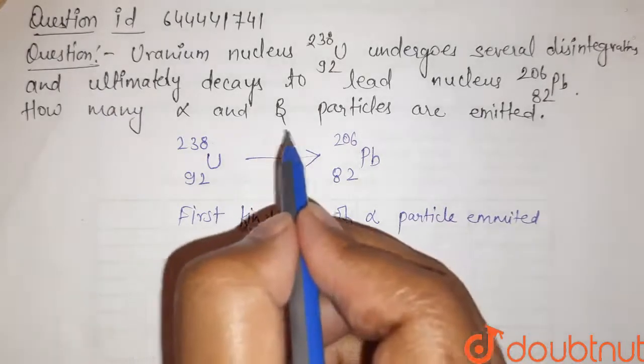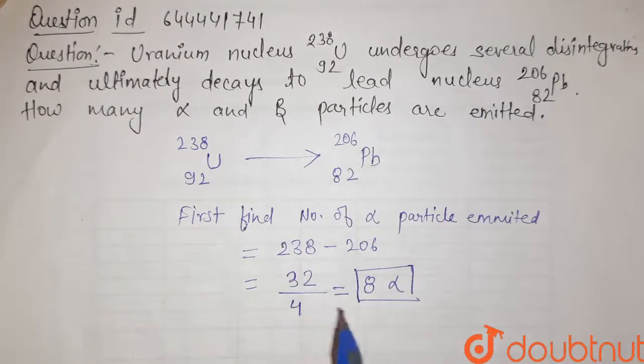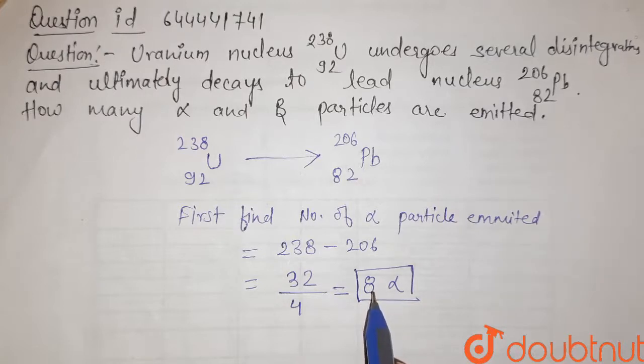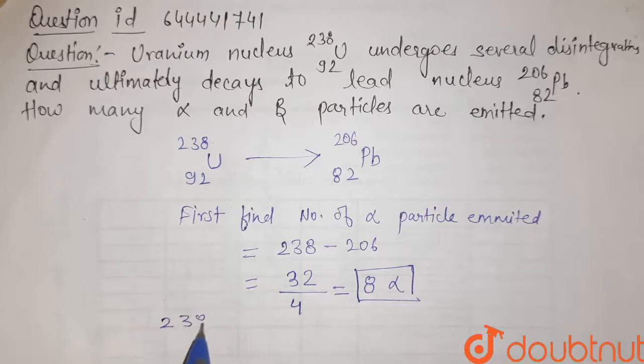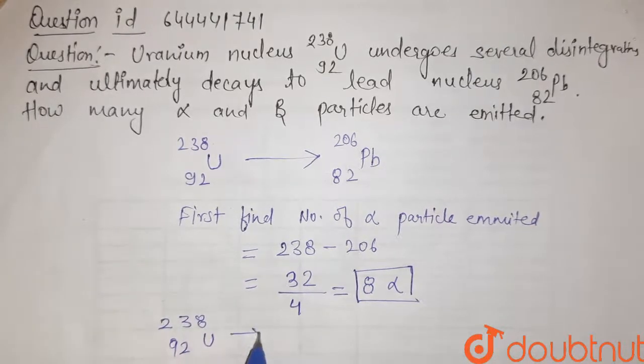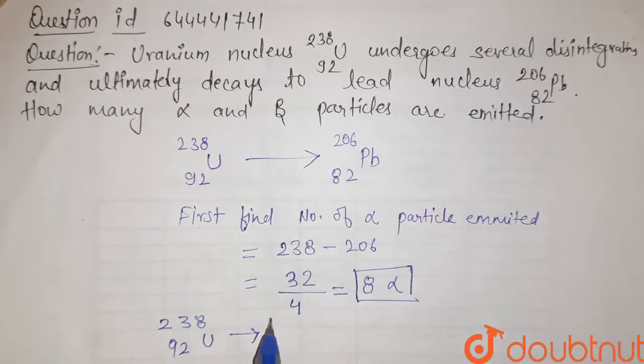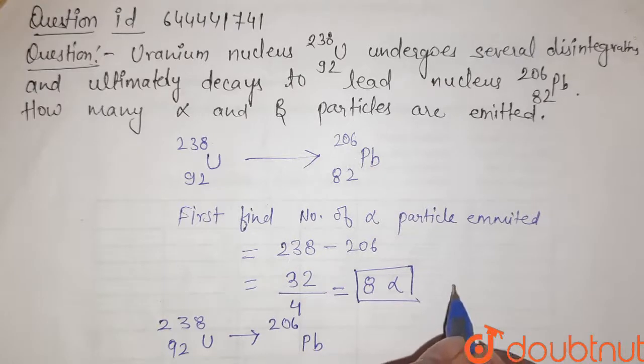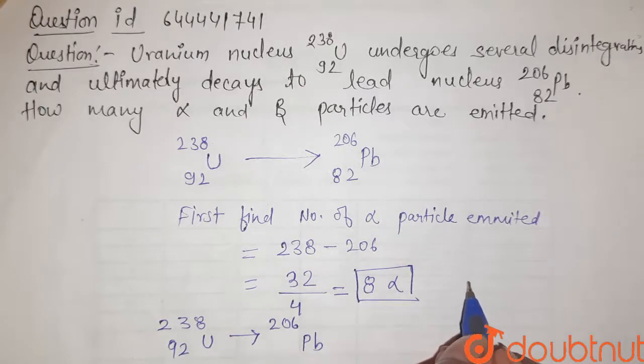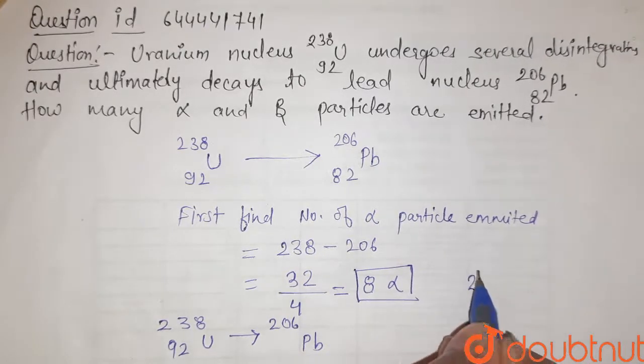Now we have to find how many beta particles are emitted. So for 8 alpha particles, there is a change in mass number of 32 and there is a change in atomic number. Atomic number changes by 2 units, so there is a change of 16 units.